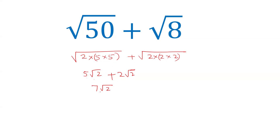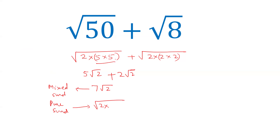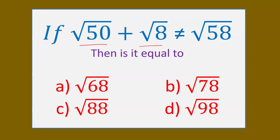Now, the next step is to convert back this mixed surd — which is called a mixed surd because it has a rational number and an irrational number — back to a pure surd, where we have only an irrational number. To convert back to a pure surd, we take the 7 inside the square root sign. Since we had taken out 5 once from the pair of 5 and 5, when 7 goes back inside the surd it will be written as a pair: 7 times 7 into 2, which gives root 98. So the sum of root 50 and root 8 is under root 98.